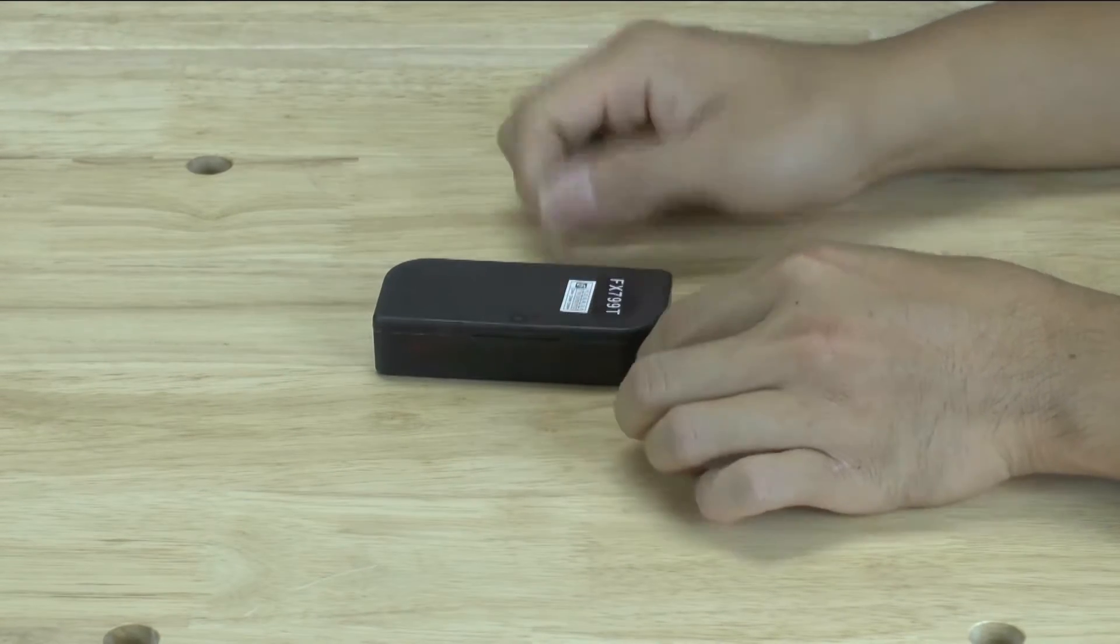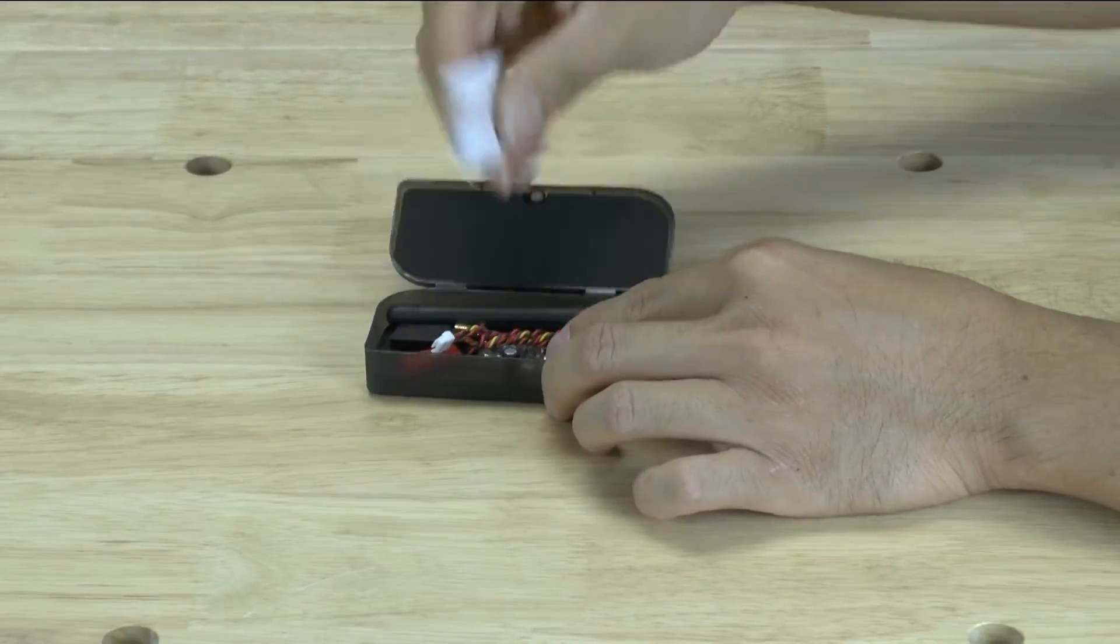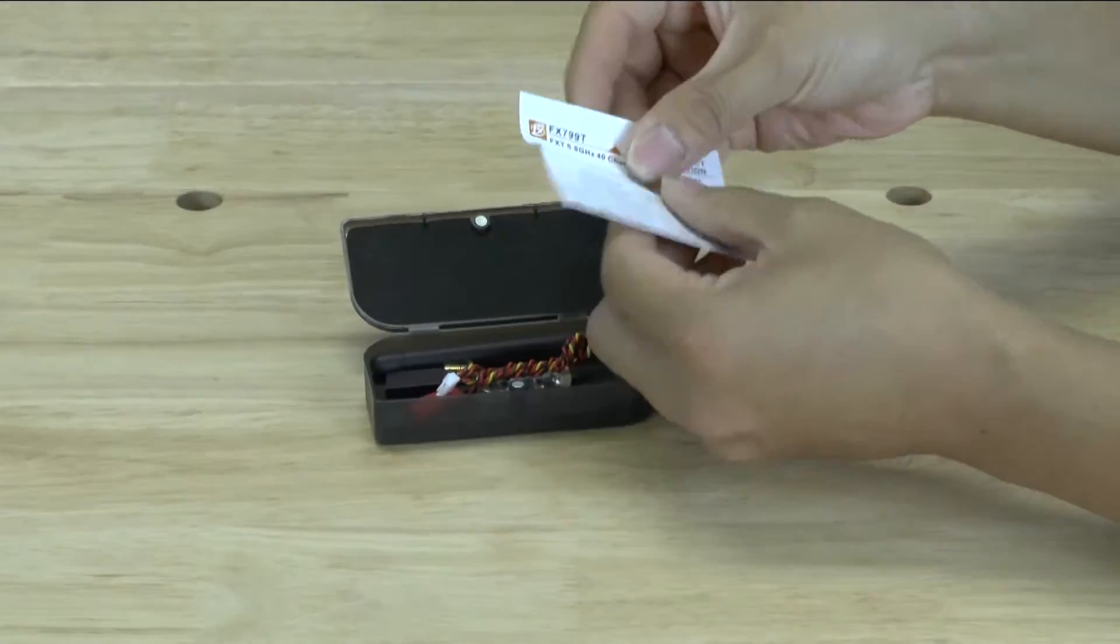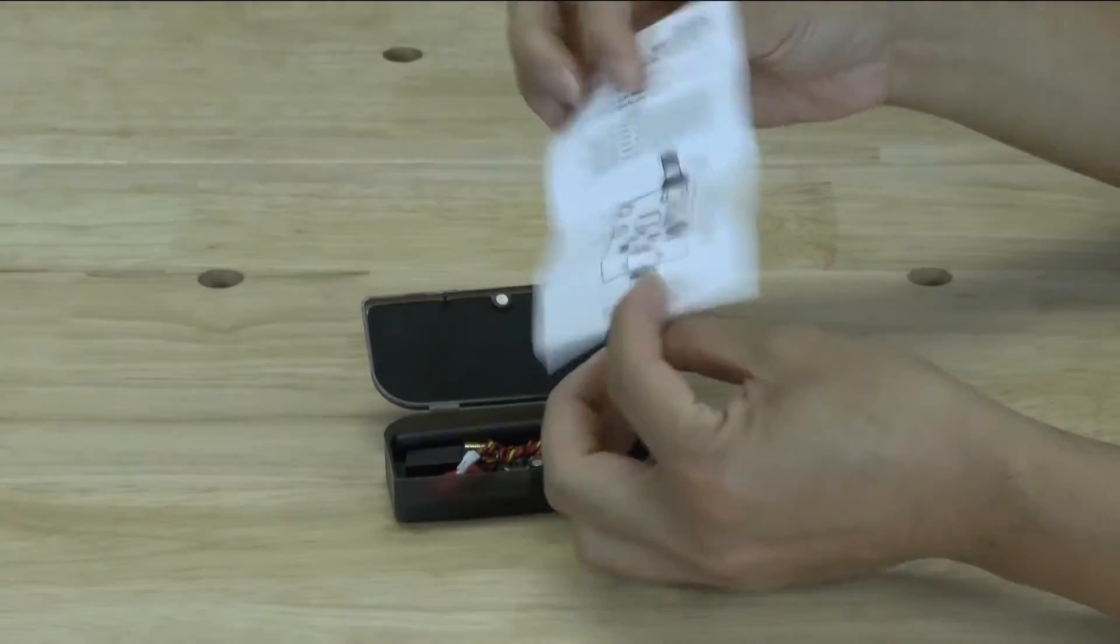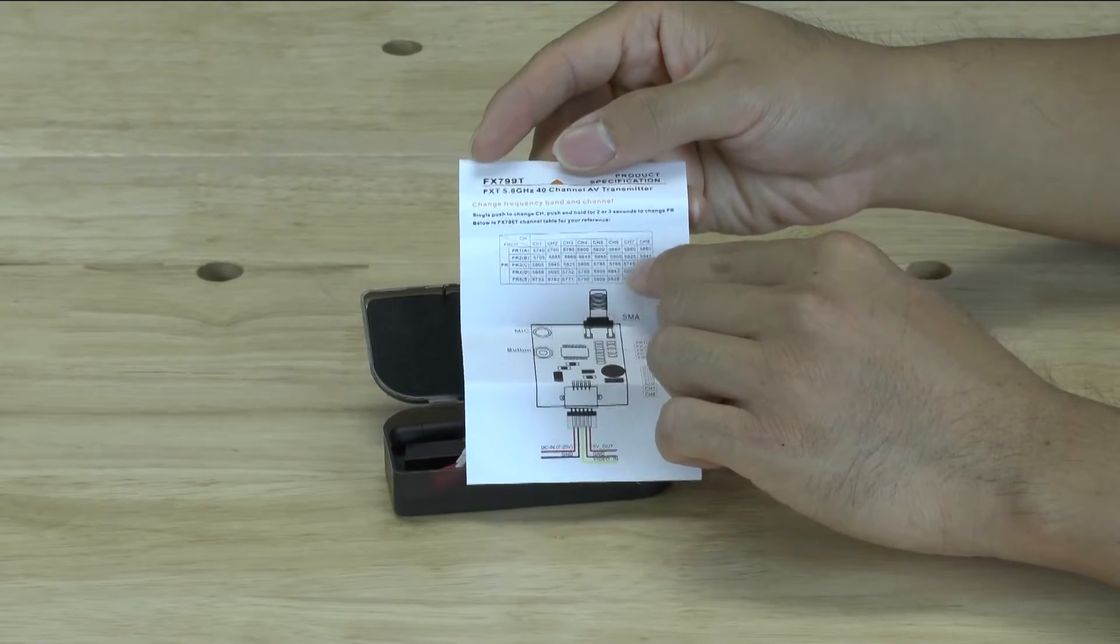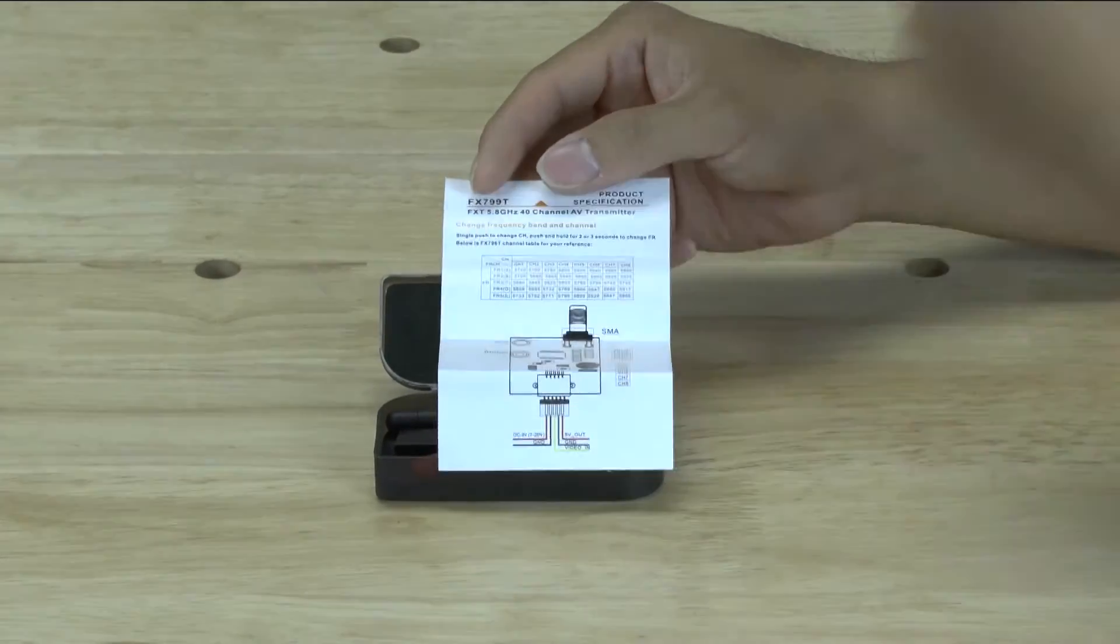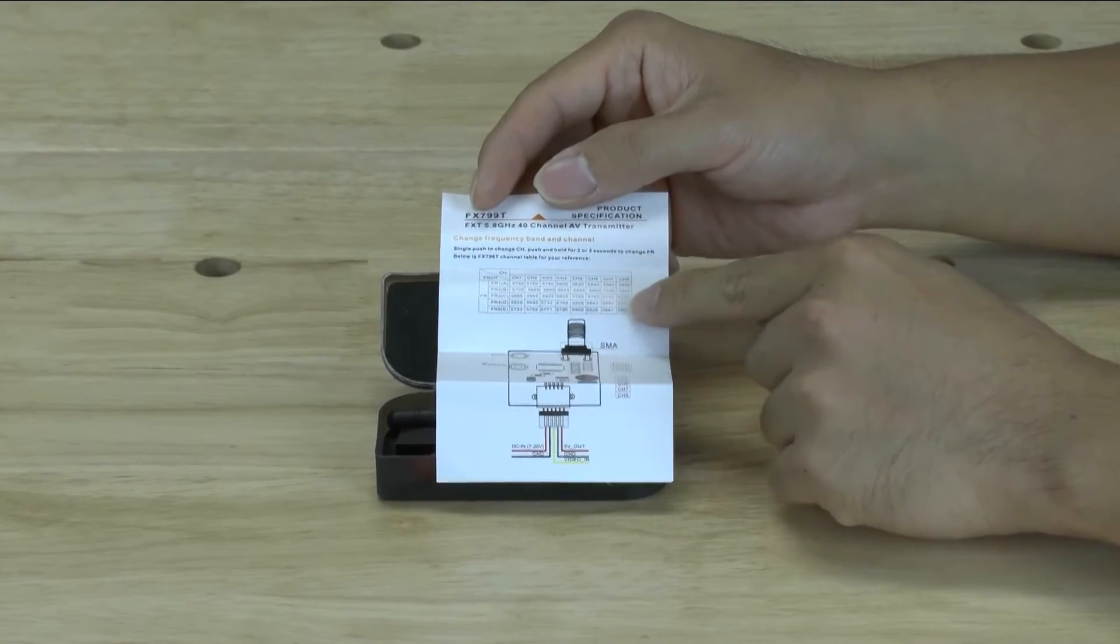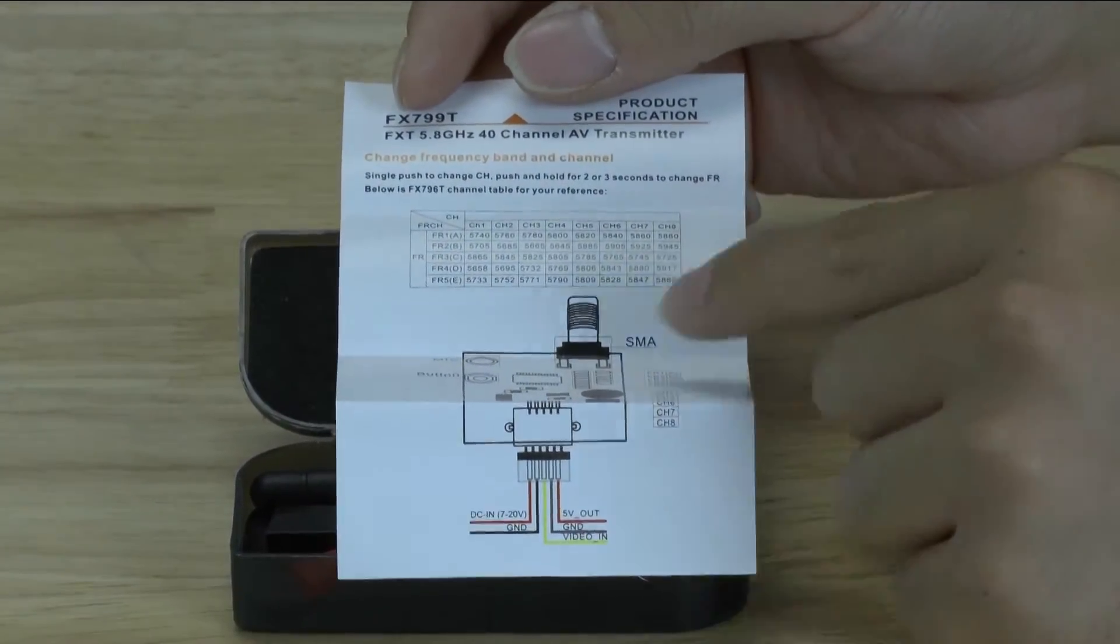Here's the plastic case that it comes in. If you open it up, it comes with the instruction manual. The instruction manual on one side gives you all the technical specs and on the other side, it'll give you all 40 channels. This is not the standard 32 that you're normally accustomed to seeing. It also has the race band channel but it doesn't cut out any of the standard 32 channels.